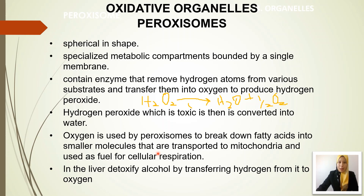The peroxisome also has a function in the breakdown of fatty acids or lipids. They can use this oxygen, and after the fatty acids are broken down into smaller molecules, they will be transported to the mitochondria and used as fuel for cellular respiration. We know that cellular respiration uses oxygen as one of its reactants.